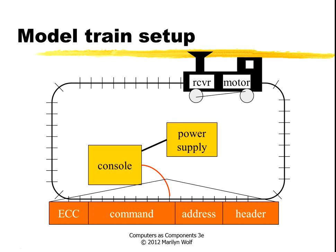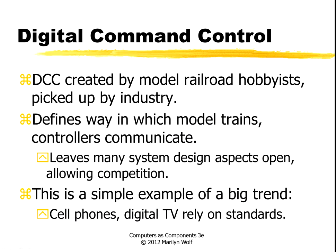We're going to use packets to communicate from the console to the train. We will not try to communicate back from the train to the console — one-way communication only. These are packets like we'd see on Ethernet or the Internet. They have an error correction code, a command, an address, and some header information.